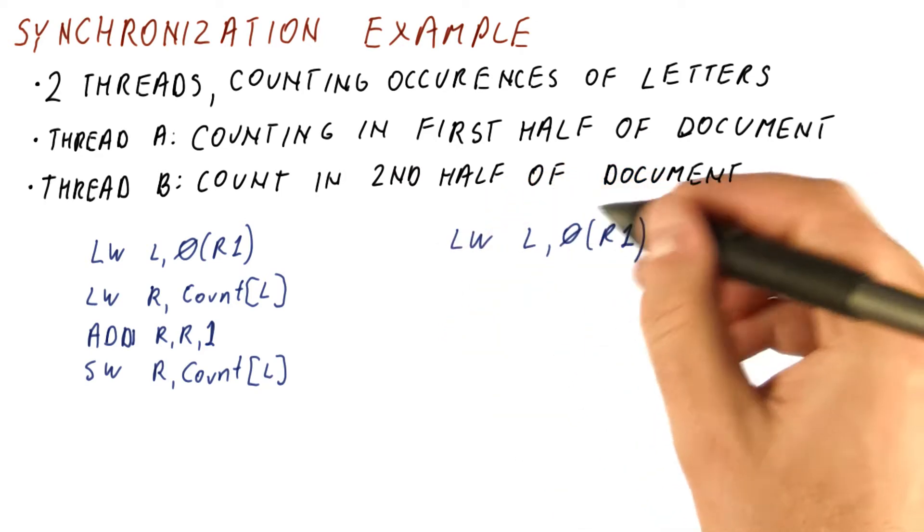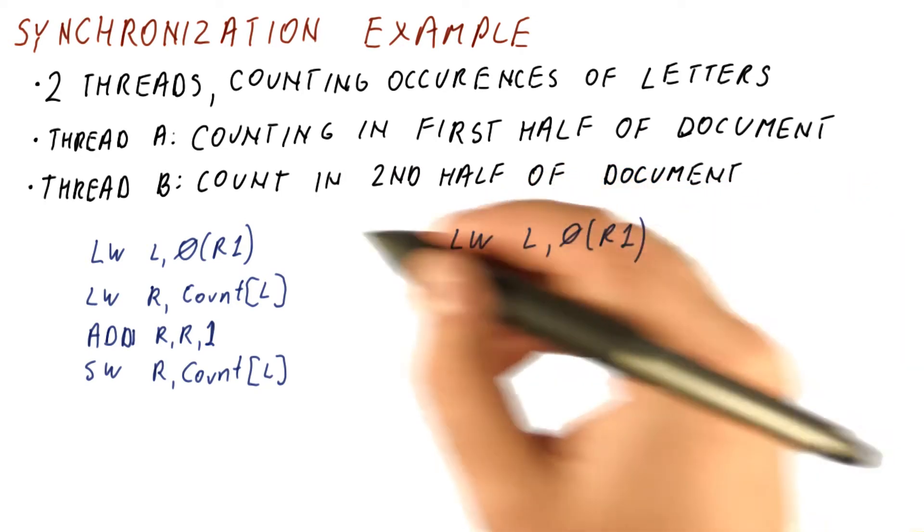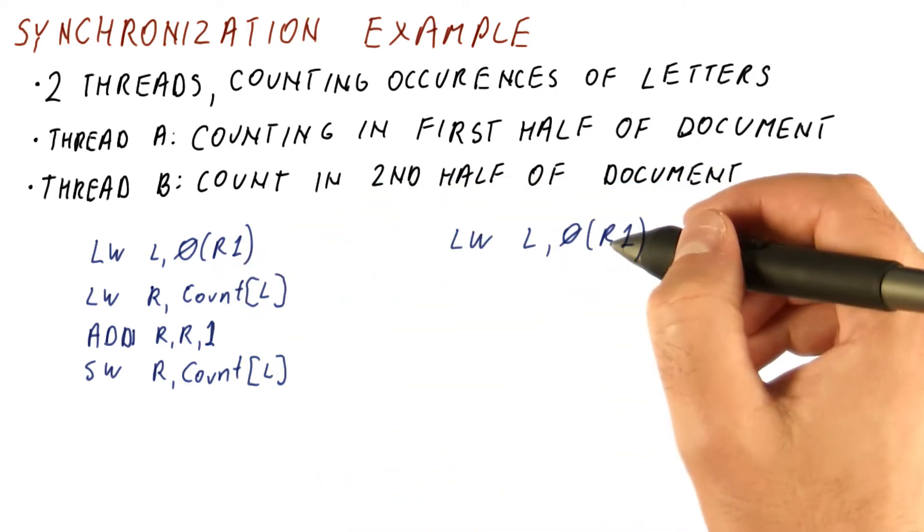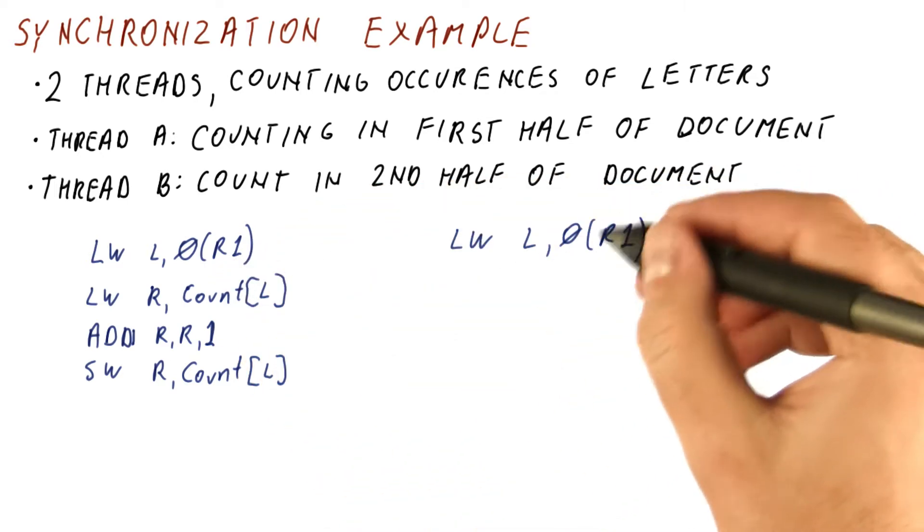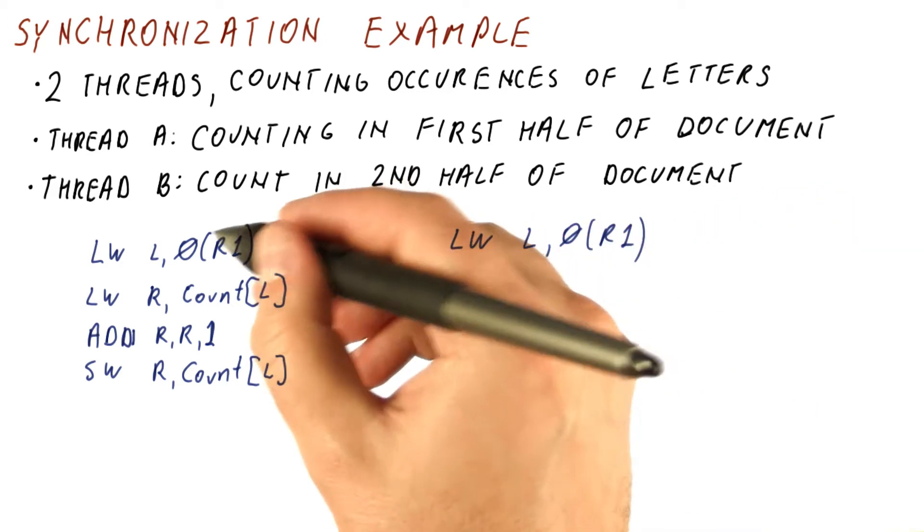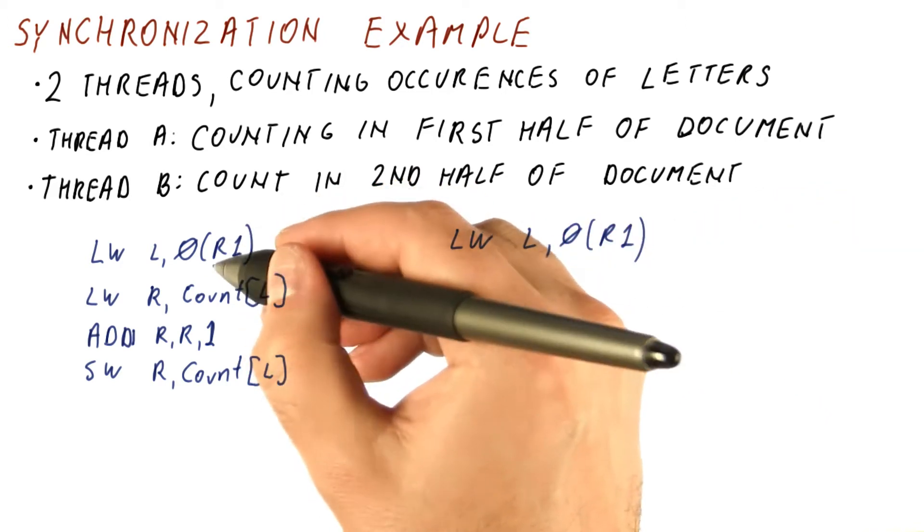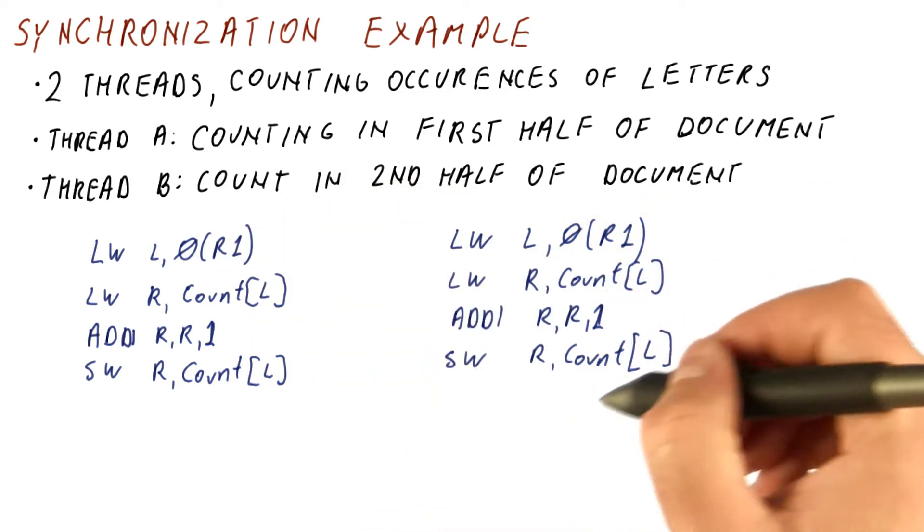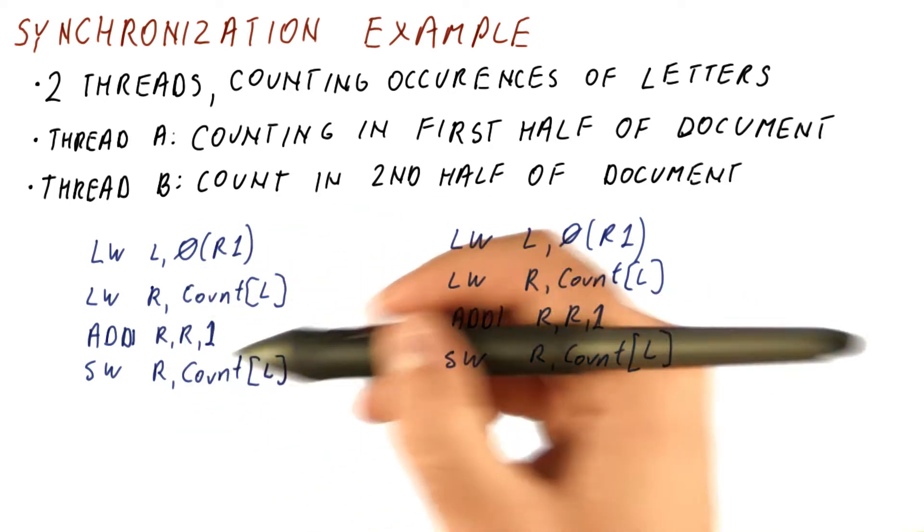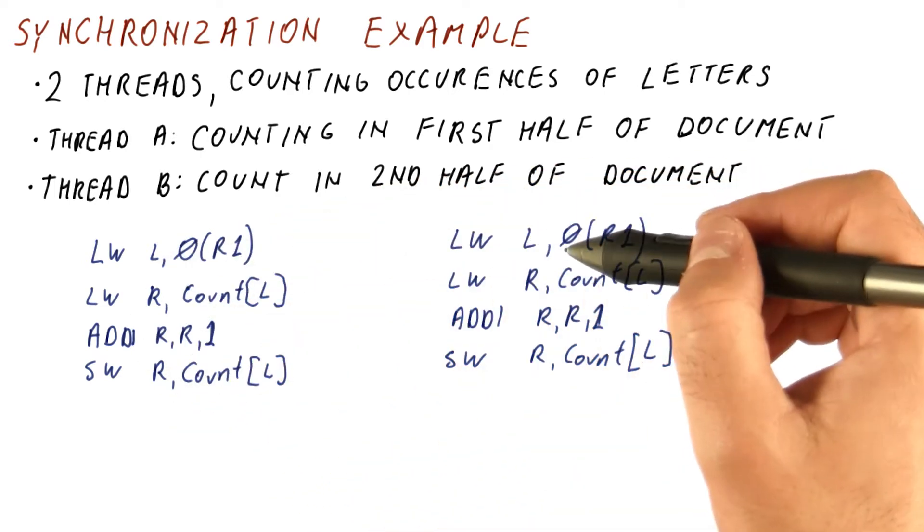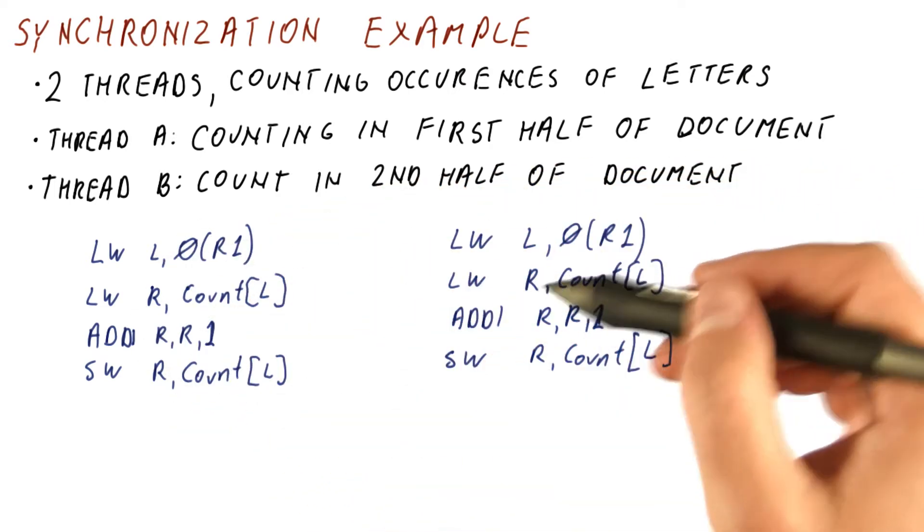It loads a letter from its own part of the array. Note that R1 and R2 are different in these threads. This is kind of the pointer to where I got in this part of the array. This is the pointer where this thread got in its part of the array. So this thread is doing exactly the same work as this one. And as long as the letters they're processing are different, this is going to work.